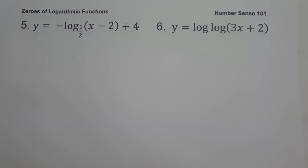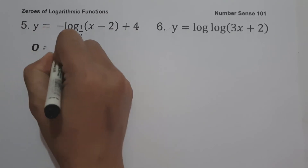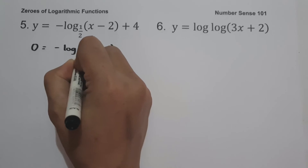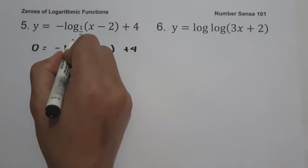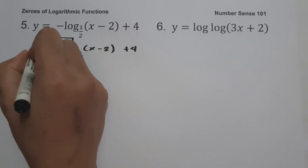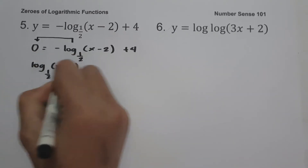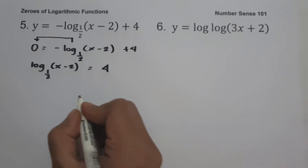On example number five: y equals negative log base 1/2 of (x − 2) plus 4. To find the zero, let us equate the function equal to zero: zero equals negative log base 1/2 of (x − 2) plus 4. To eliminate the negative sign, let us move it to the other side, giving us log base 1/2 of (x − 2) equals 4.